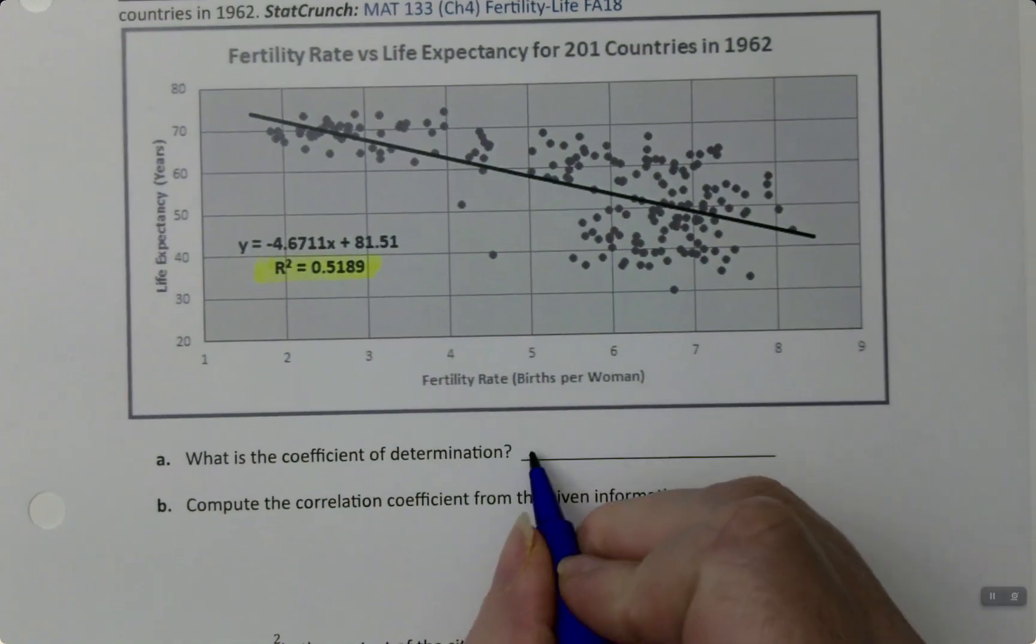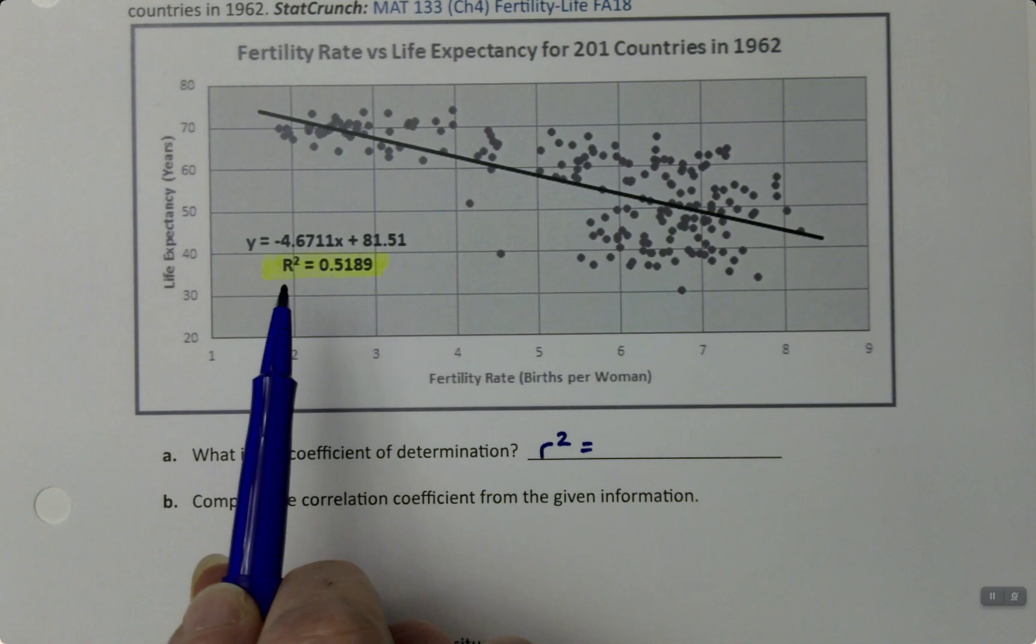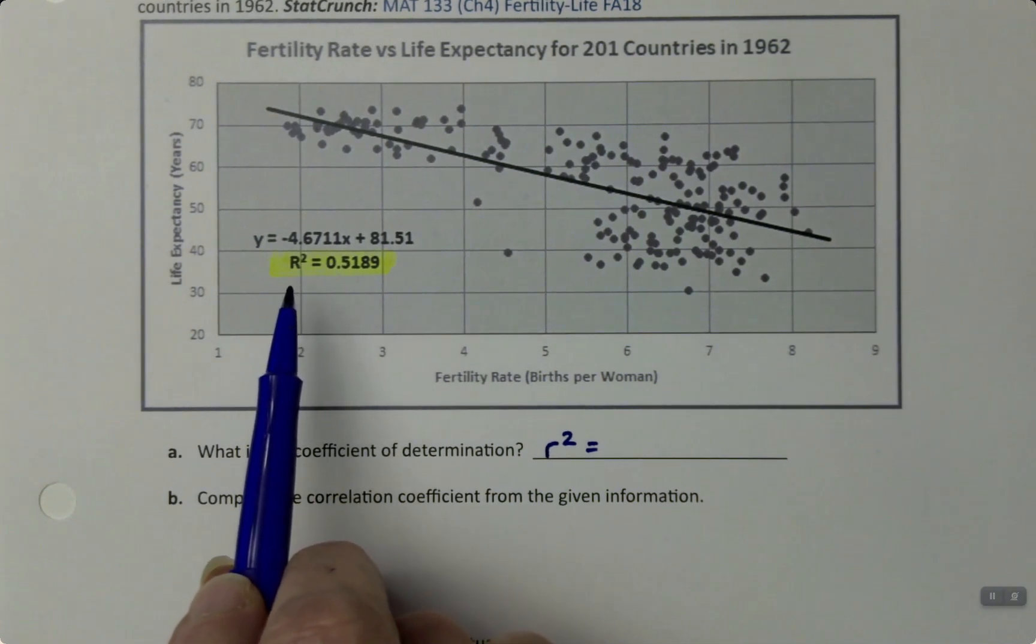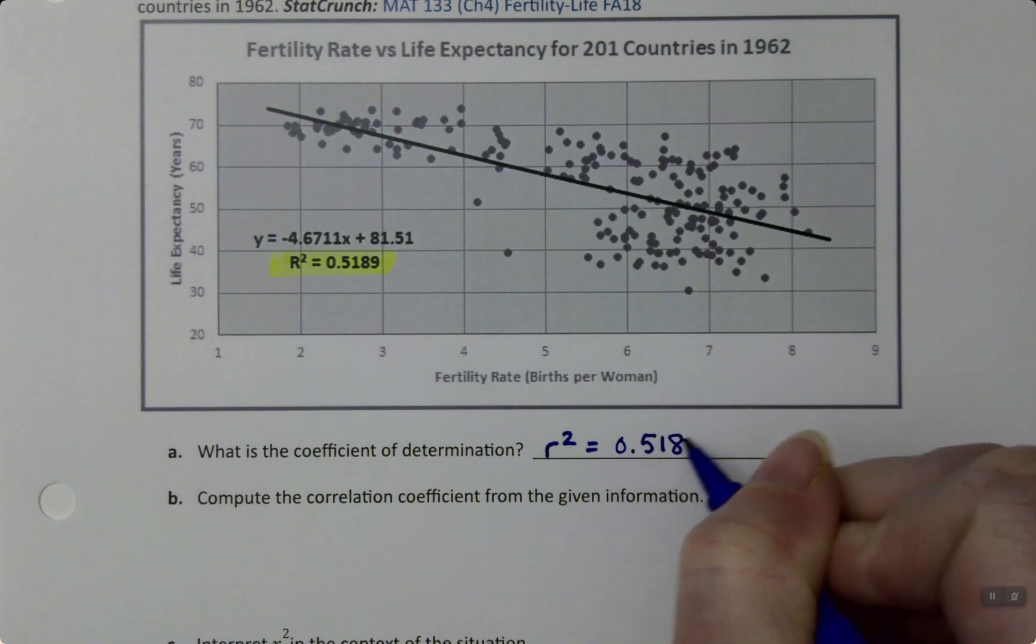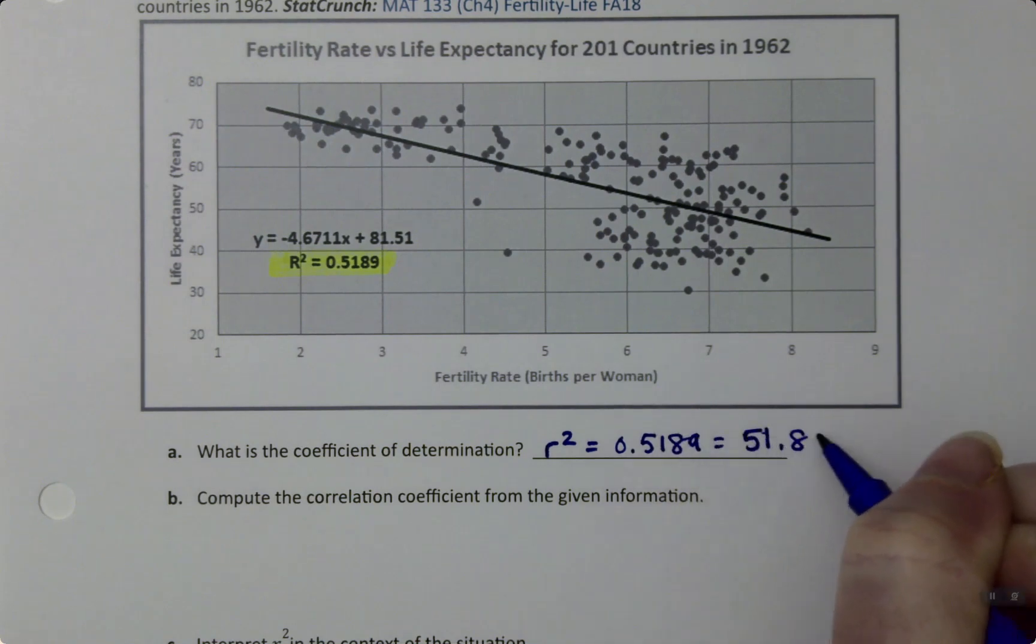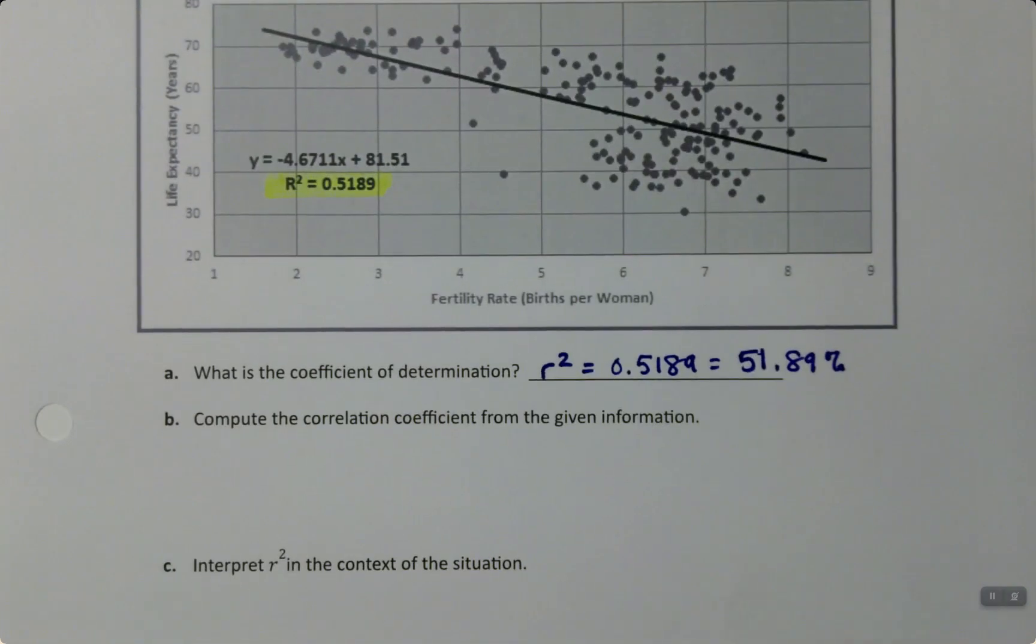Okay, so what is R-squared? Well, the R-squared, which is also capital R-squared - again, computers often use capital R just for clarity - it is 0.5189, or if you like, 51.89%. Lovely. That's the coefficient of determination.